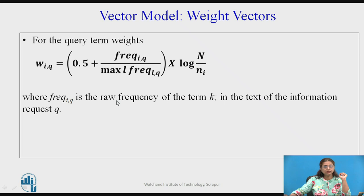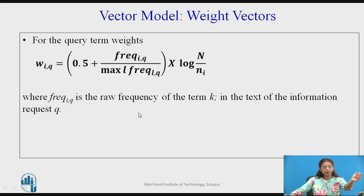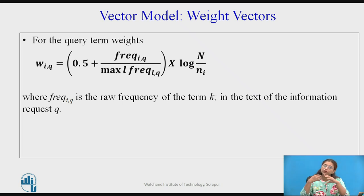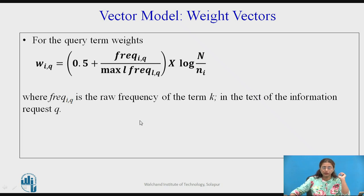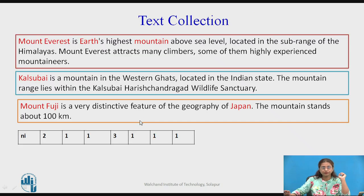This is the formula for the query vectors. The 0.5 term has been introduced because it may happen that only a few words with only one occurrence appear, and that is how we can create the weight vectors for the queries.